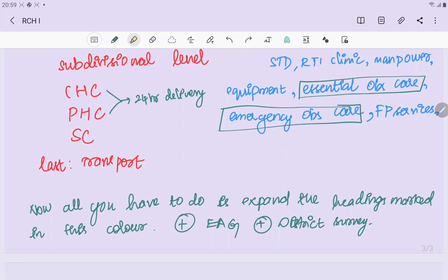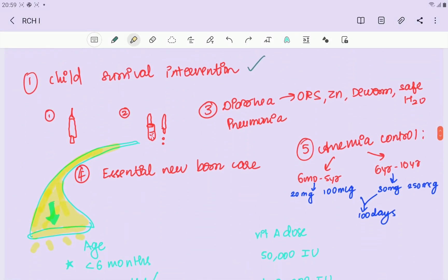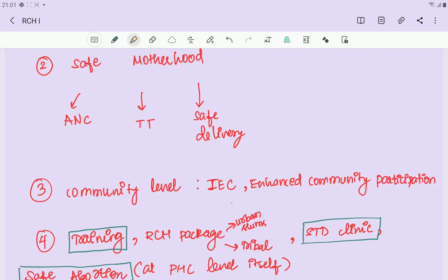Child survival intervention includes universal immunization - we will take a vitamin A prophylaxis dropper in a small bottle. Then immunization and vitamin A prophylaxis, diarrhea and pneumonia which are huge parts of IMNCI. Essential newborn care and anemia control. If you have adolescent control, you can include anemia control.